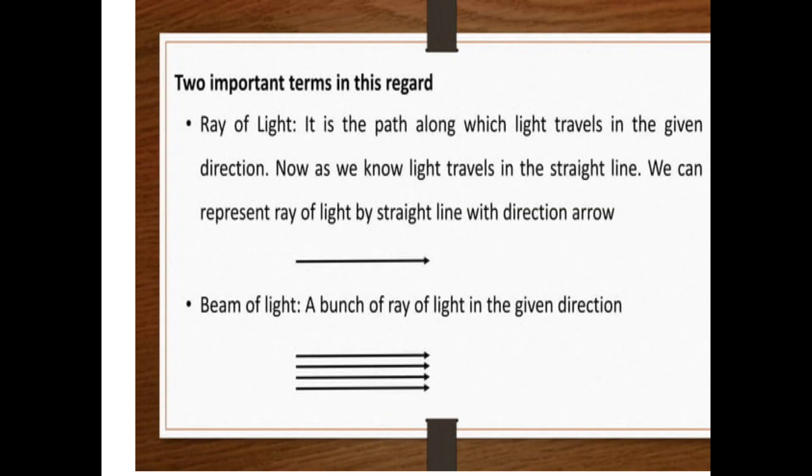Two important terms in this regard are first the ray of light. It is the path along which light travels in the given direction. Now as we know light travels in a straight line, we can represent ray of light by straight line with direction arrow. Another is beam of light: a bunch of rays of light in the given direction.